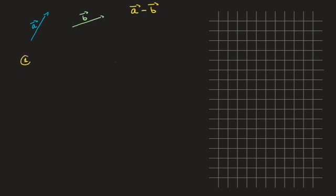For the first method, we start by drawing the two vectors from the same point. So I draw vector A starting here, and starting at the same point I now draw vector B. Then the vector A minus B is the vector joining the head of vector B to the head of vector A — that's the vector A minus B.